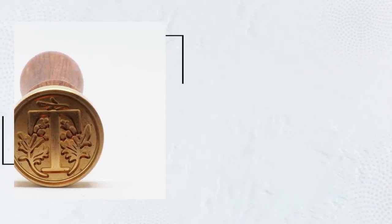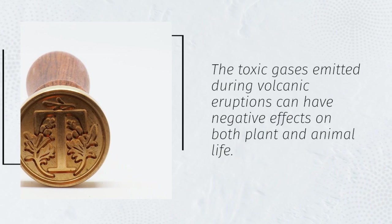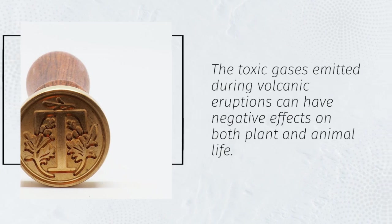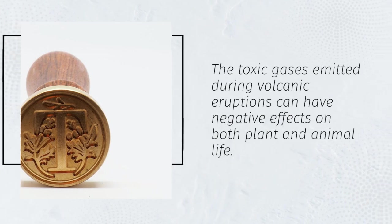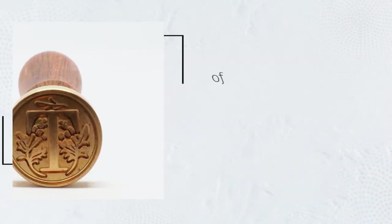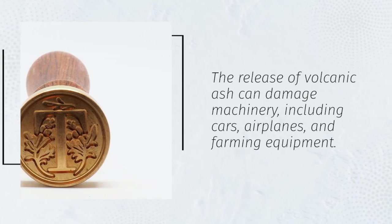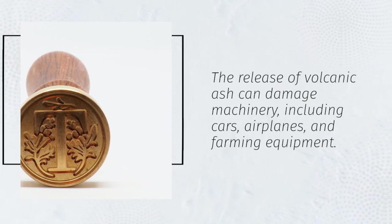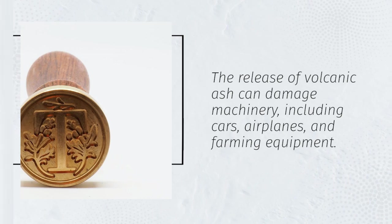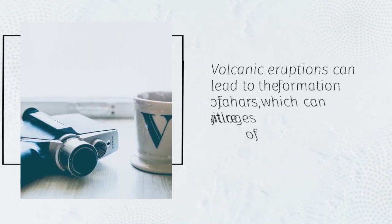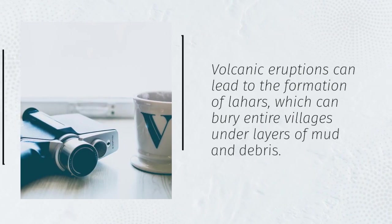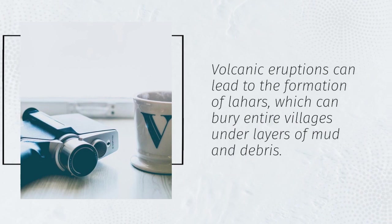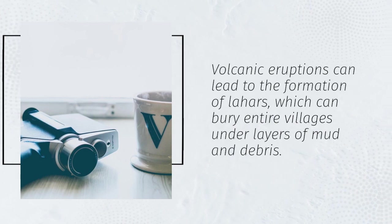The toxic gases emitted during volcanic eruptions can have negative effects on both plant and animal life. The release of volcanic ash can damage machinery, including cars, airplanes, and farming equipment. Volcanic eruptions can lead to the formation of lahars, which can bury entire villages under layers of mud and debris.